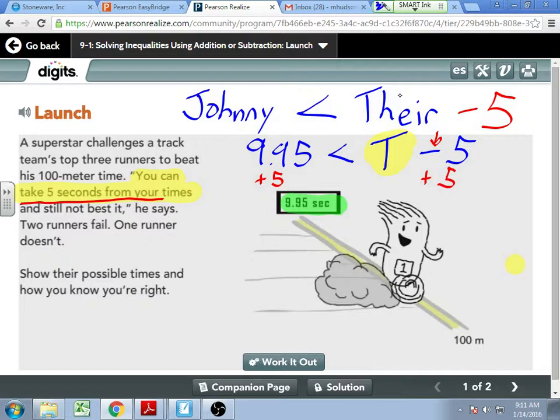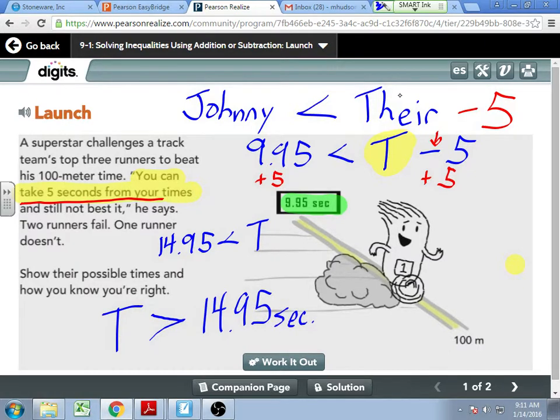That will then give us 14.95 is less than T. Or if I turn this around to put my T first, I will have to turn around everything. So T comes on the left. Now I flip my inequality symbol. T is greater than 14.95 seconds.